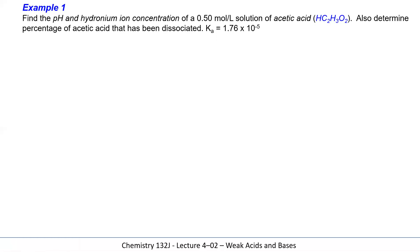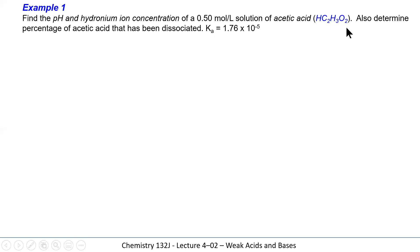We're going to find the pH and the hydronium ion concentration of a 0.5 mol/L solution of acetic acid, and determine the percentage of acetic acid that's dissociated. The Ka is 1.76×10⁻⁵. When doing acid-base problems, first determine if it's a strong or weak acid. The seven strong acids — hydrochloric, hydrobromic, hydroiodic, perchloric, sulfuric, and chloric — don't include acetic acid, so it's a weak acid.